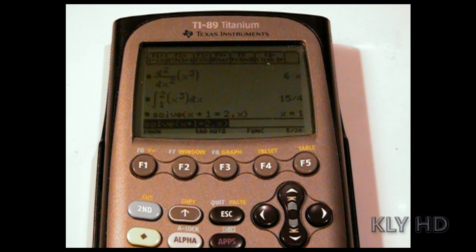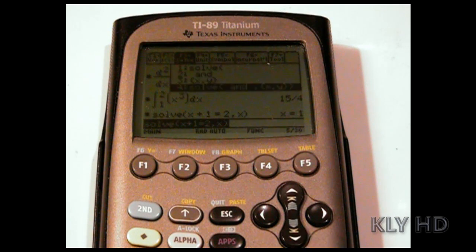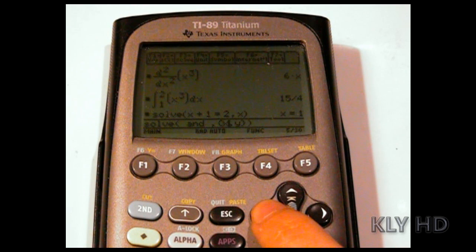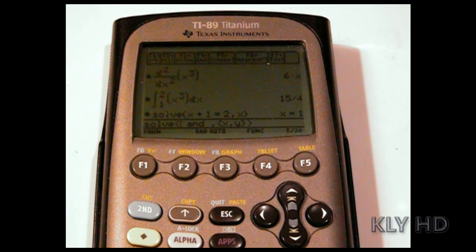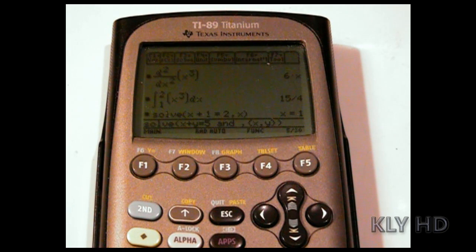For two variables, press 2nd and then Home for Custom and choose F3 for Solve. Then choose the Solve AND for xy. Type in the two equations with the two unknowns, leaving a space next to the AND. X plus y equals 5, space and space, 2x plus 3 equals 5.